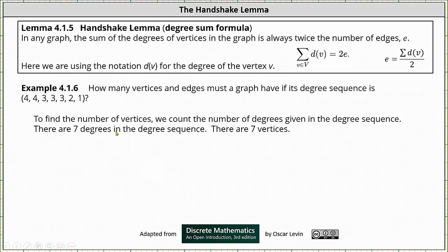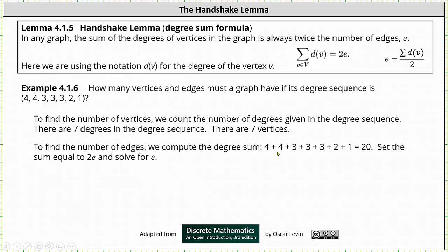First, to find the number of vertices we count the number of degrees given in the degree sequence. Notice there are seven degrees in the degree sequence indicating there are seven vertices. And now to determine the number of edges we compute the degree sum, which we can see is equal to 20, and then we set this equal to 2e and solve for e.